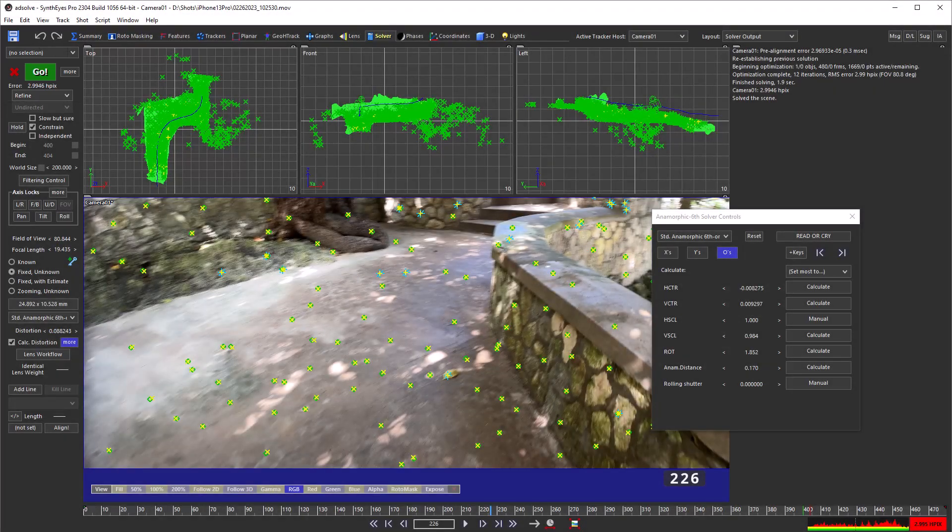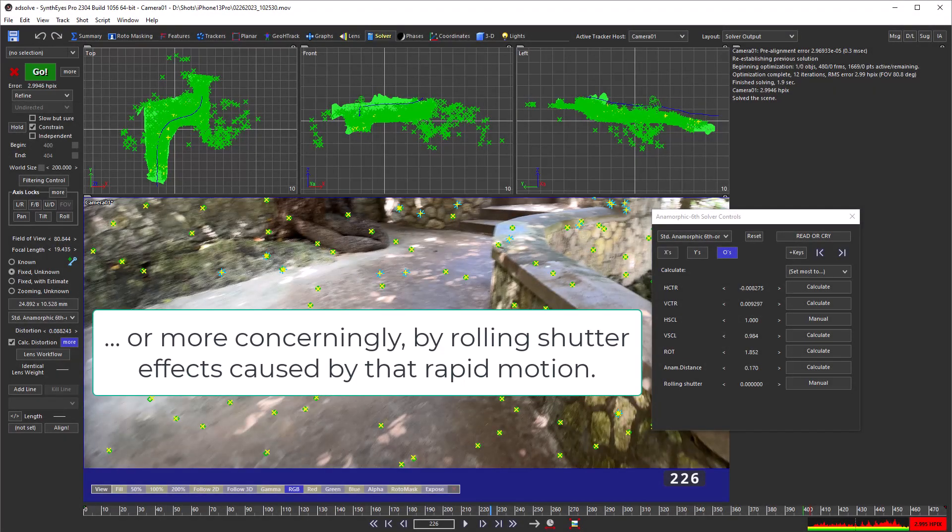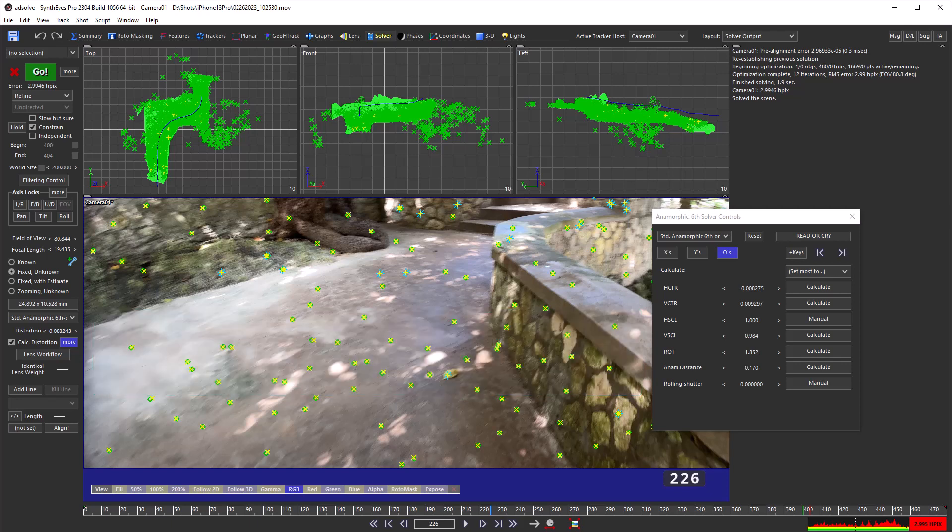It is possibly spurious, resulting from all the motion blur. You'll want to check whether it makes enough difference to the solve to keep it, considering the downstream complexity that it will cause. We'll take a look at that shortly.